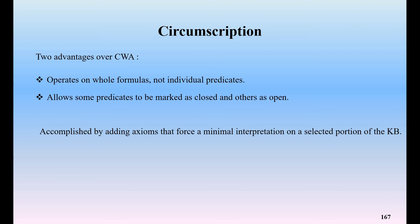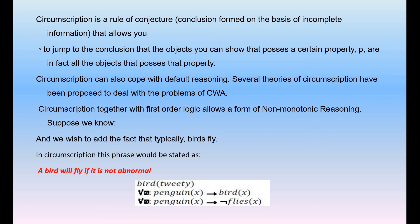Next, circumscription. Circumscription is a rule of conjecture — a conclusion formed on the basis of incomplete information. Conjecture allows you to jump to the conclusion that an object you can show possesses a certain property, or in fact all objects possess that property. Circumscription also works with default reasoning, and several theories of circumscription have been proposed to deal with the problems of closed world assumption. Circumscription together with first-order logic allows a form of non-monotonic reasoning.